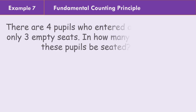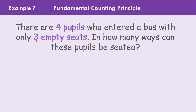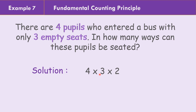For number seven, four pupils enter a bus with only three empty seats. In how many ways can these pupils be seated? For the first seat, four pupils could sit; once one sits, three choices remain for the second seat; then two for the third. So 4 × 3 × 2 = 24 ways the pupils can be seated.